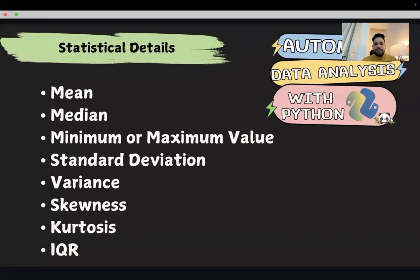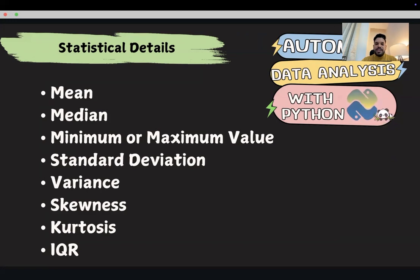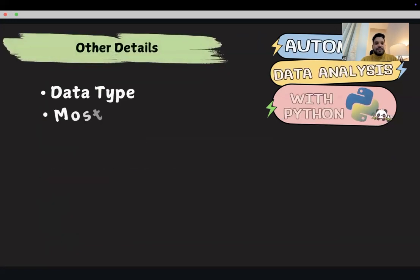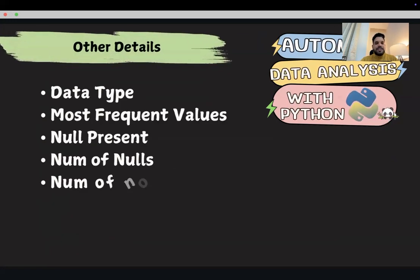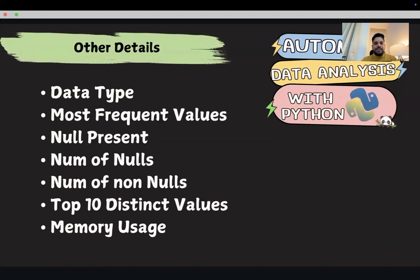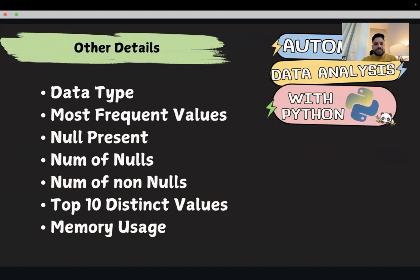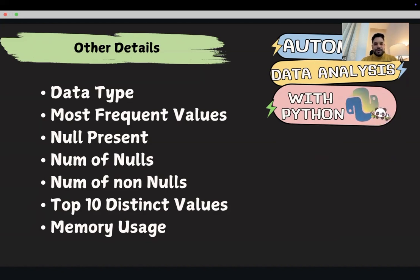In this particular session we will derive a function that will calculate mean, median, minimum, maximum value, standard deviation, variance, skewness, kurtosis, and IQR. Apart from this we will discuss other details that calculate data type of a column, most frequent value, how to handle null values, top 10 distinct values, and memory usage. By the end of this video you will be able to analyze any dataset just like a pro.